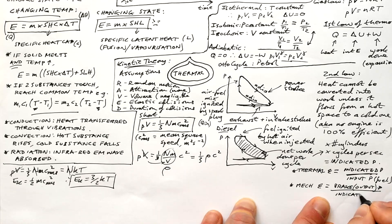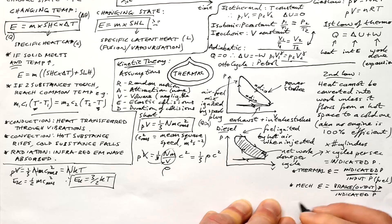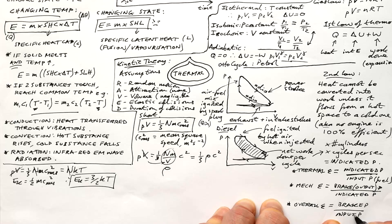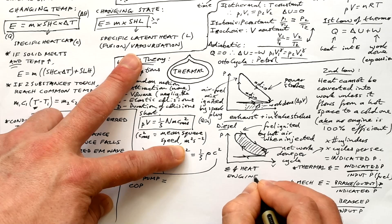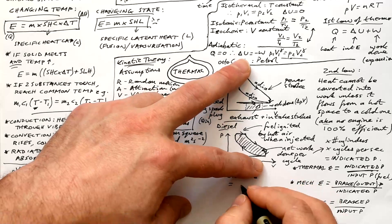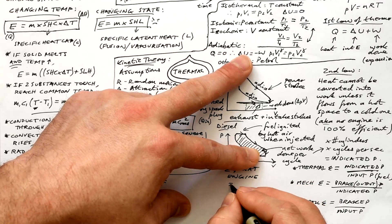Mechanical efficiency, brake power, that's output power, divided by indicated power. That's where power and energy is lost due to friction. And overall efficiency, brake power divided by input power. The maximum theoretical efficiency of an engine can be given by the difference in temperatures between the hot space and the cold space divided by the temperature of the hot space.